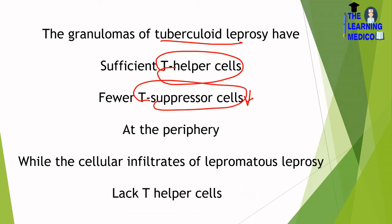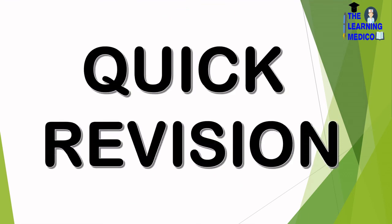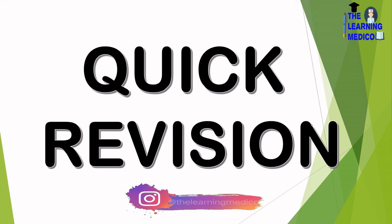The cellular infiltrates of lepromatous leprosy lack T helper cells. In tubercular leprosy, T helper cell activity is present, but in lepromatous leprosy, T helper cell levels are very low, which is why no reaction is seen. The Fernandez's and Mitsuda's reactions are positive in tubercular leprosy and negative in lepromatous leprosy.